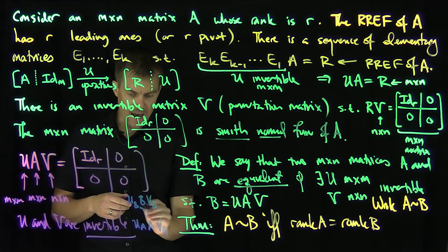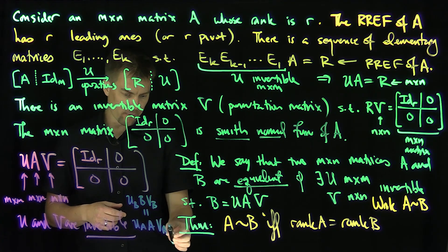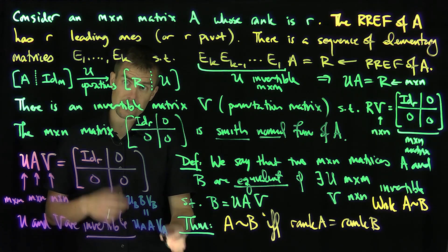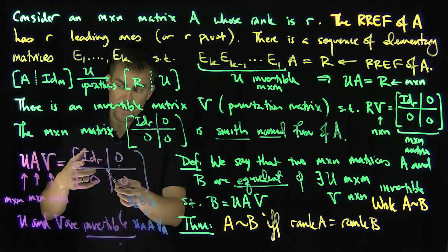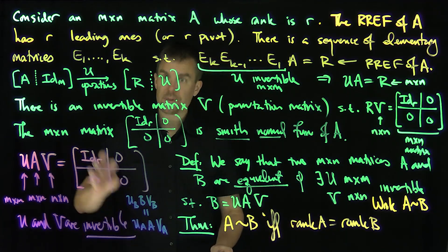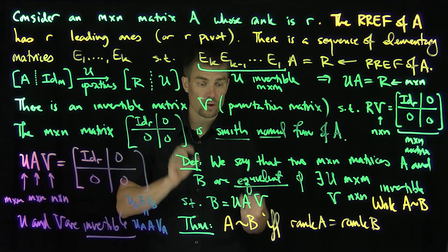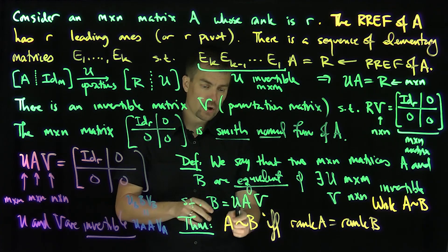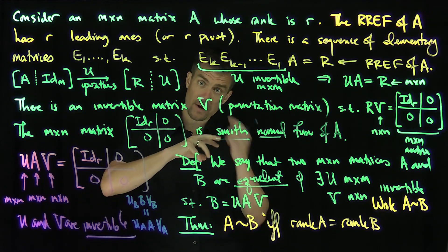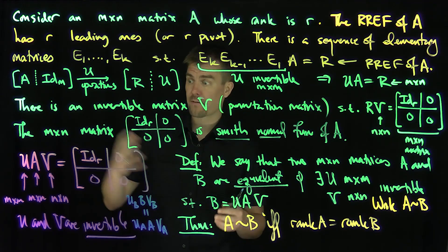Since both U_A A V_A and U_B B V_B equal the same form, we can write B equals V_B inverse times (U_A A V_A) times U_B inverse, showing B is equal to some invertible matrix times A times another invertible matrix. So B is equivalent to A. The Smith Normal Form of two matrices with the same rank shows they are equivalent, meaning they are the same matrix up to an invertible M by M matrix rearranging rows and an invertible N by N matrix rearranging columns. Two matrices are equivalent if and only if they have the same rank, if and only if they have the same Smith Normal Form. Thank you very much.